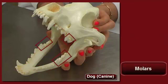Lastly, we can see the molars. These are the teeth farthest back in the mouth behind the premolars. They're used for grinding food into small pieces for digestion.